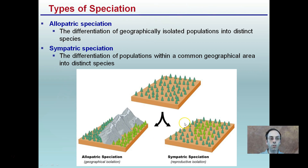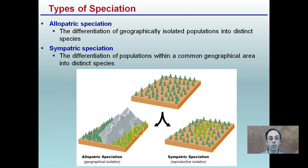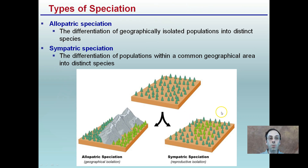There are two types of speciation, and this picture is a great way to visualize them. Allopatric speciation is the differentiation of geographically isolated populations into distinctive species — for example, a mountain region that separates populations, resulting in a darker-colored green and a lighter-colored green variant. Sympatric speciation is the differentiation of populations within a common geographical area into distinct species. We see in the middle region a greater number of lighter green trees than the darker greens on the outside, representing reproductive isolation occurring through sympatric speciation.